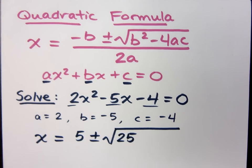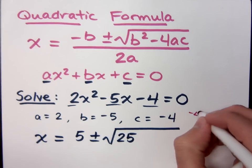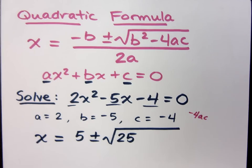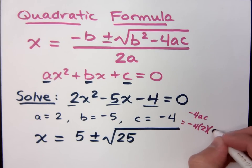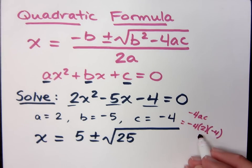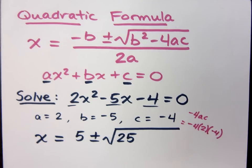Now the minus 4ac stuff is something we want to take off to the side and look at. So minus 4 times a times c is negative 4 times a, which equals 2, times c, which equals negative 4. So negative 4 times 2 is negative 8, times negative 4 is positive 32.